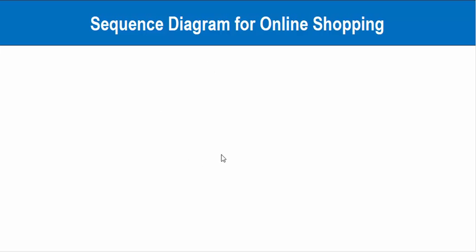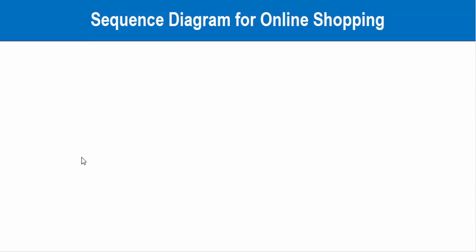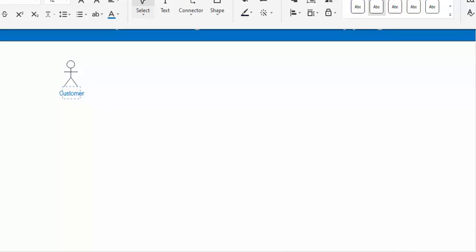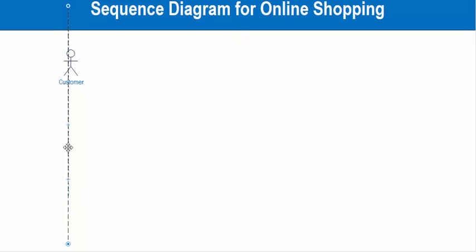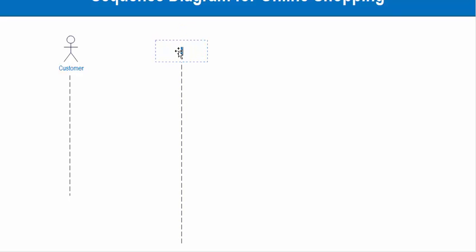For the online shopping, first I will create the sequence diagram for the search catalog. Whenever a customer comes and is searching in the catalog, I will create the sequence diagram for searching the catalog. So first I will draw the customer actor here. Now let's draw the lifeline for this customer. This line shows the lifeline of the customer.